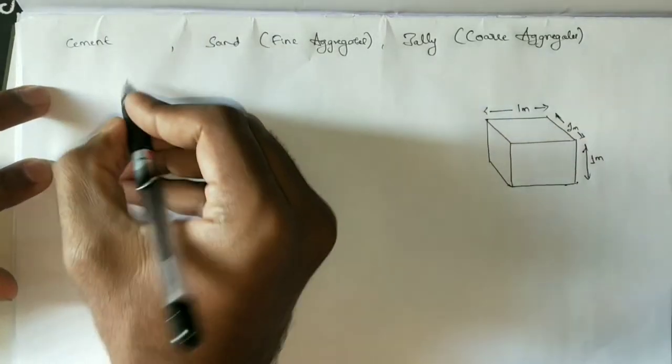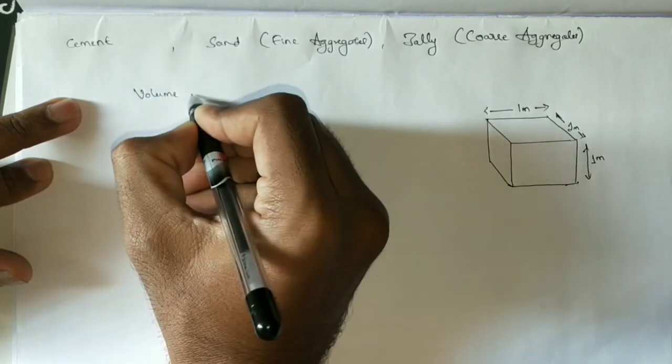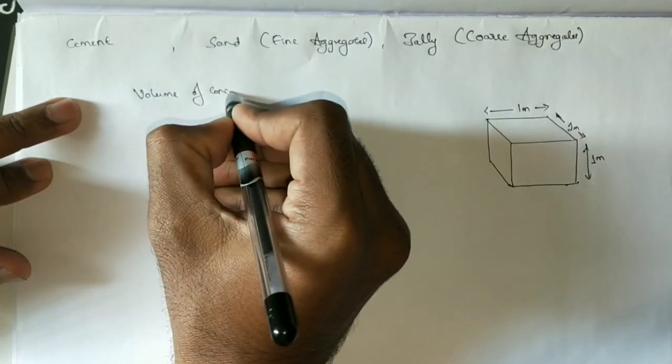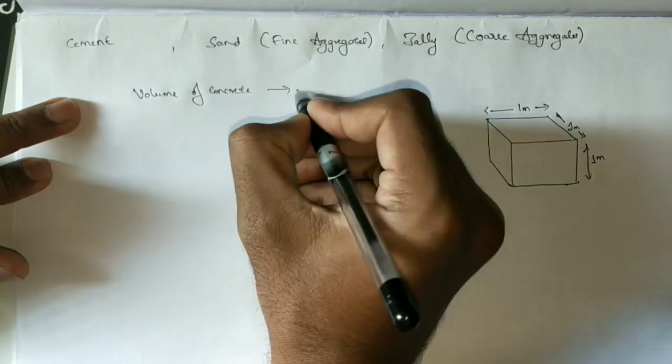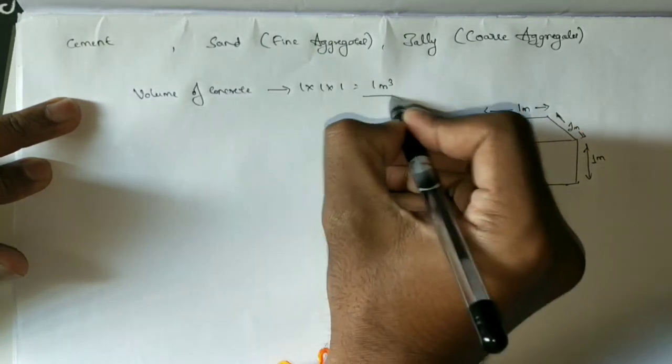So the volume of concrete will be 1 by 1 by 1, which is 1 cubic meter of concrete.